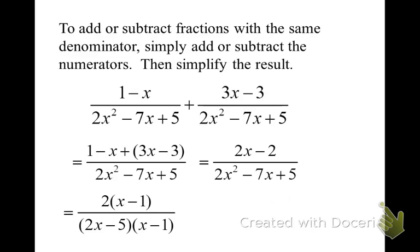Again, you're going to need to have a pretty good knowledge of factoring in order to be able to handle these problems. Now we're going to cancel the factors. So the x minus 1s get canceled, and we end up with our final answer of 2 over 2x minus 5.